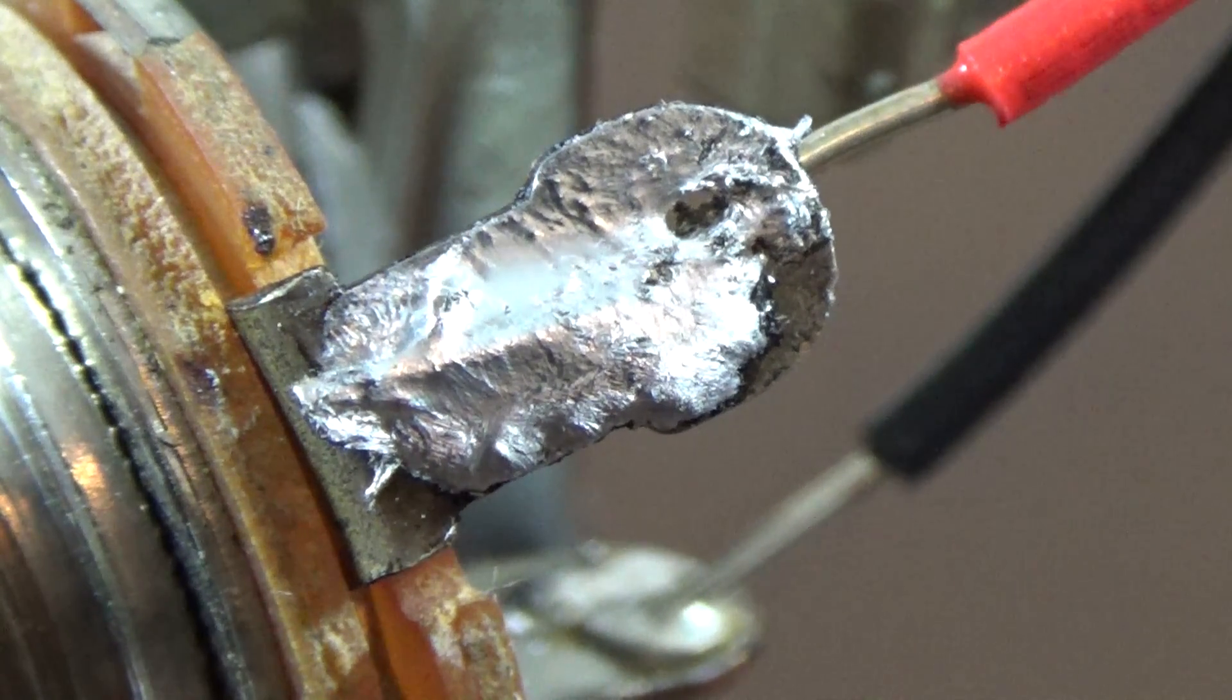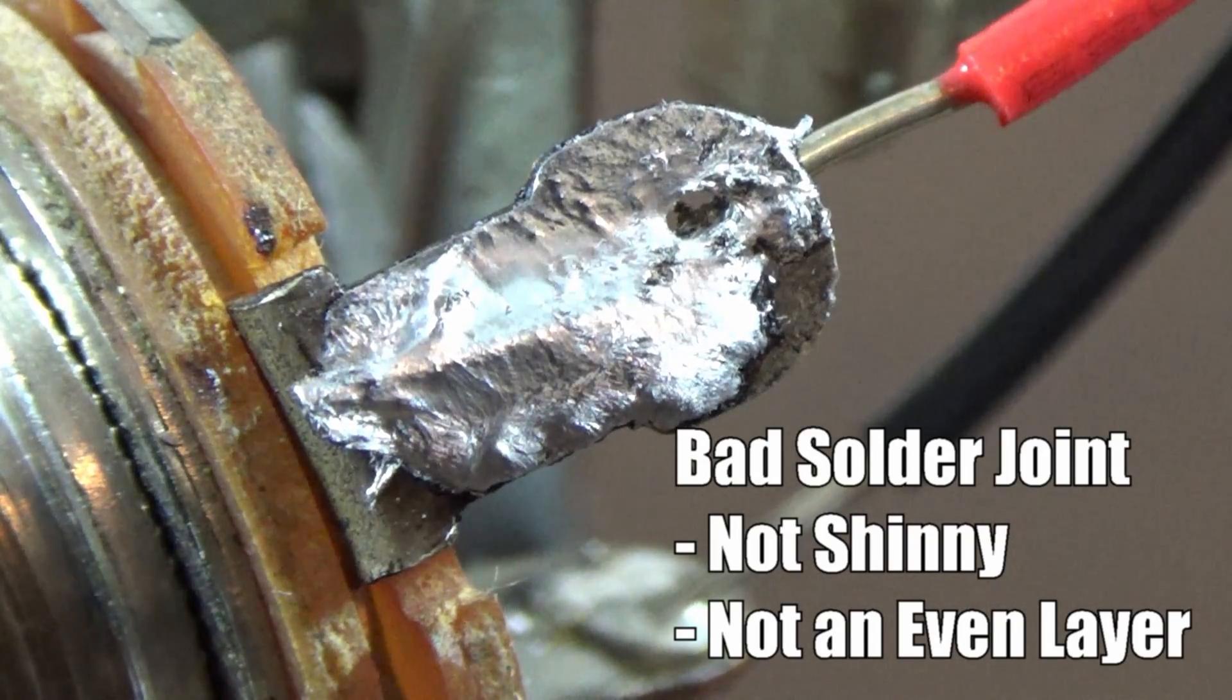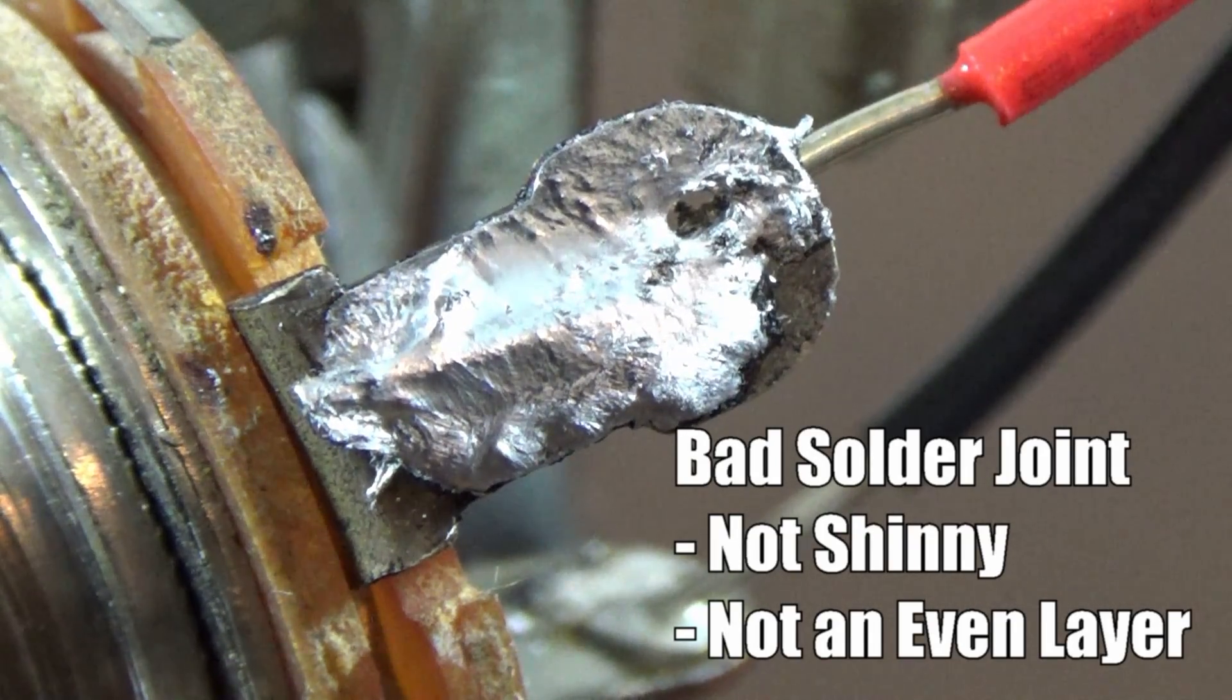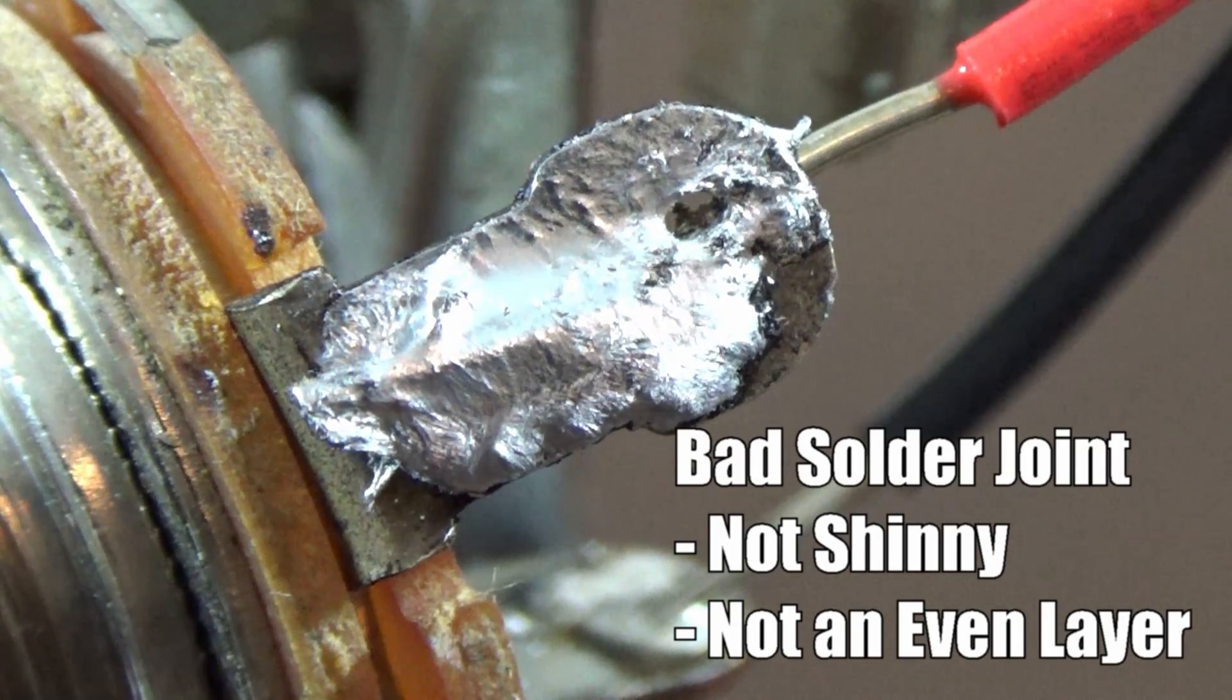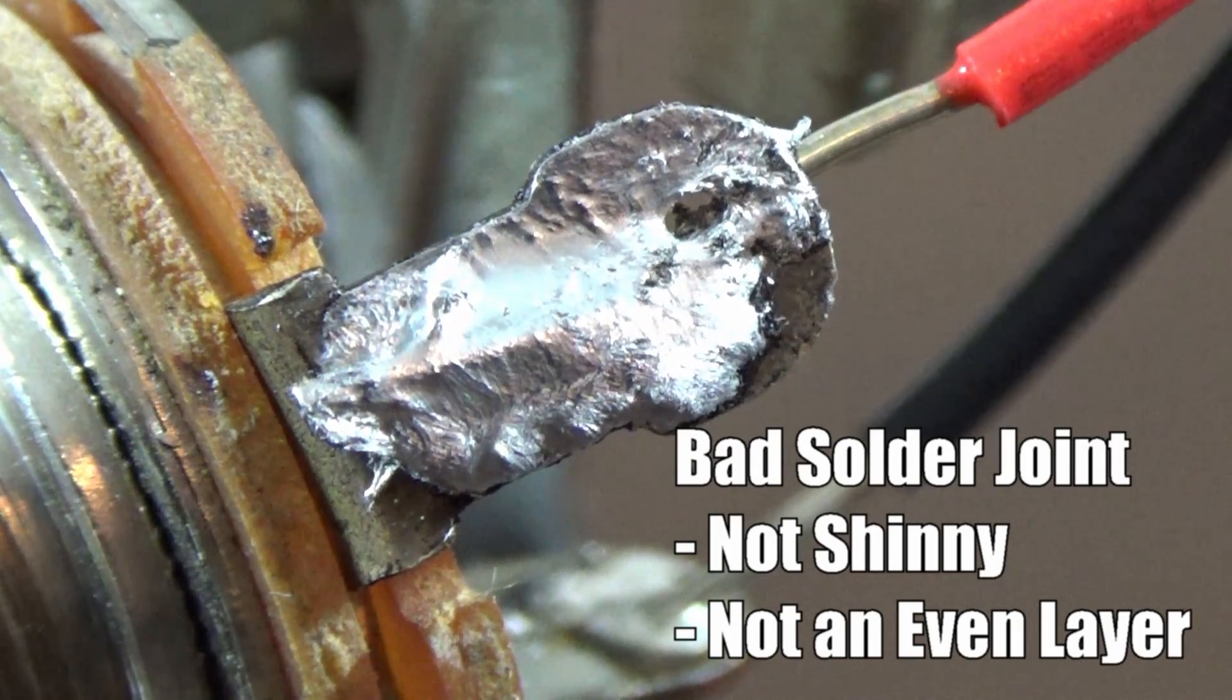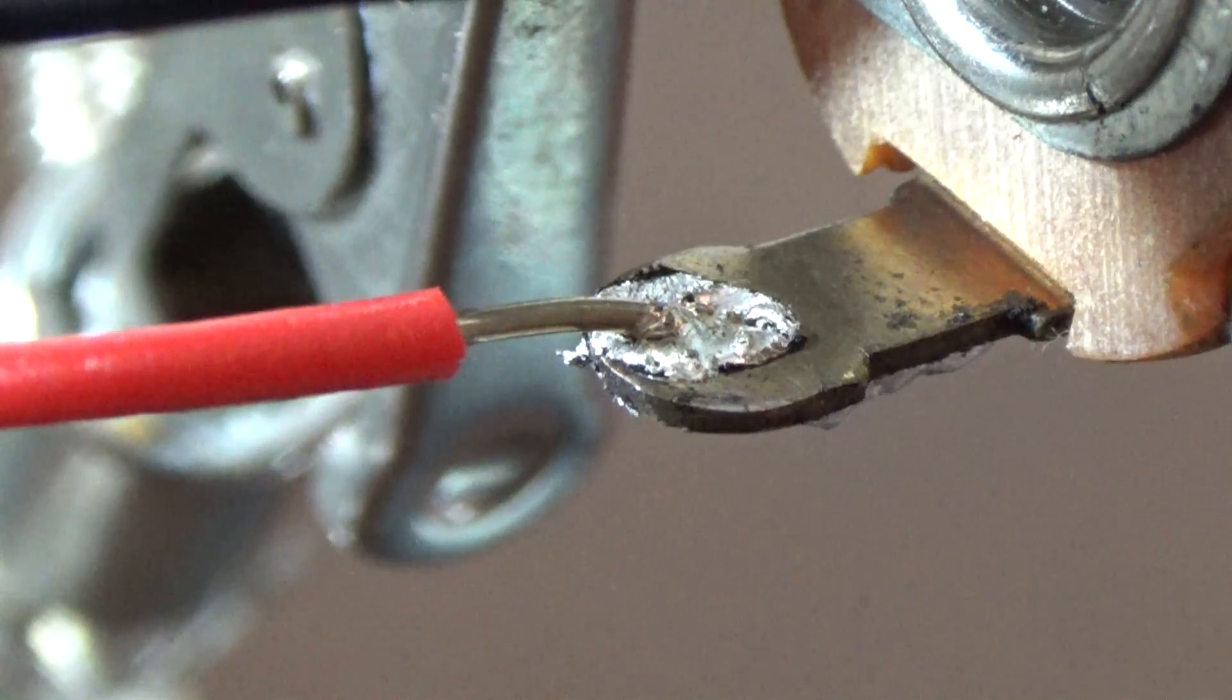Here's an example of a bad solder joint. This is for the signal. This is not as good quality, it's not as shiny and it's a little rough around the edges. This is not a big problem if it happens to you. You can go ahead and reapply the iron and reflow the solder.